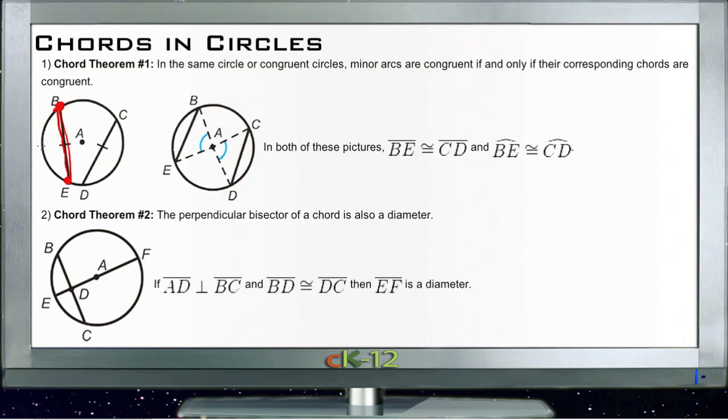Now, obviously that means that a diameter is a type of chord. It's just a special chord because it actually goes right through the center of the circle. So a diameter, specifically by definition, is a chord that hits the center.